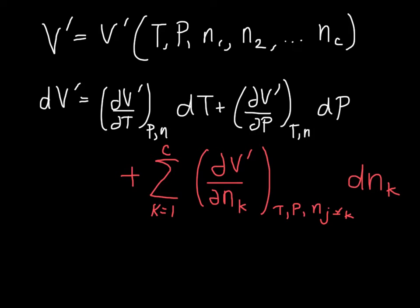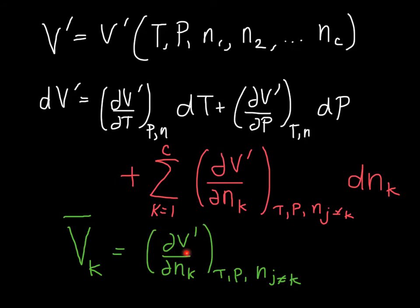And we are going to define that to be the partial molar volume. And we use the symbol like this, V with the bar on top. This is the partial molar volume of component K. And it's simply defined as how the total volume of the system changes as we add more moles of K while keeping temperature, pressure, and the number of moles of other species constant as well. So, this is how the system volume changes when we add more K.